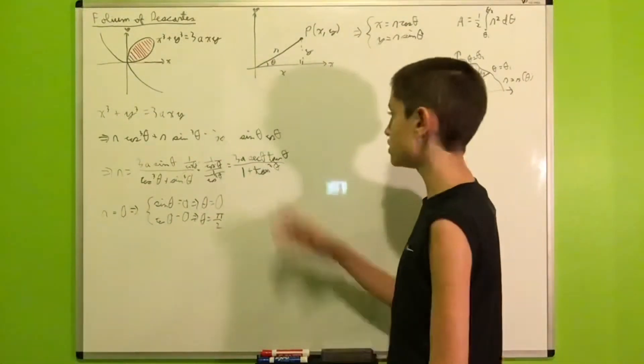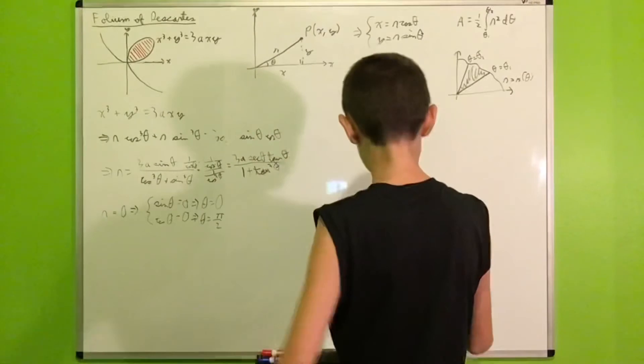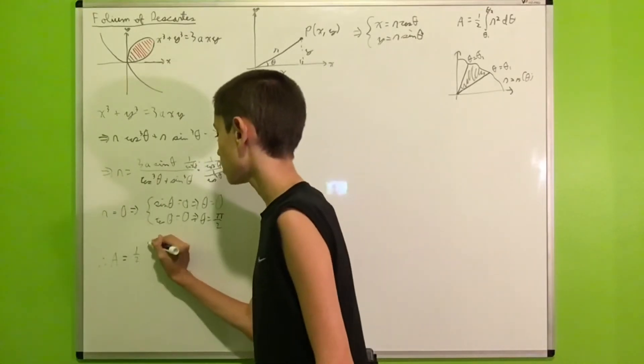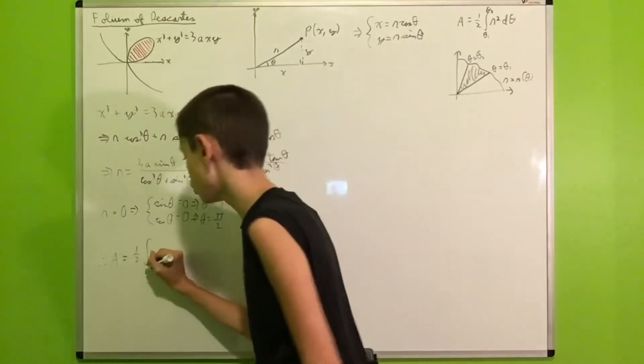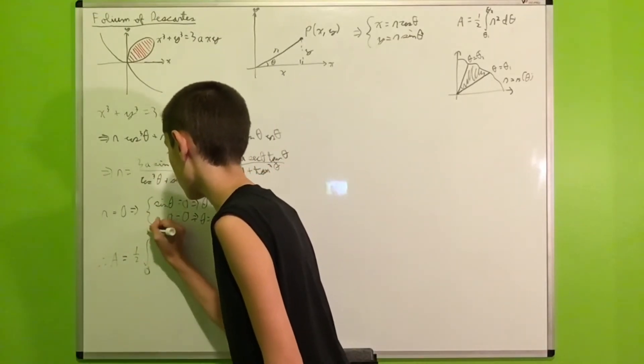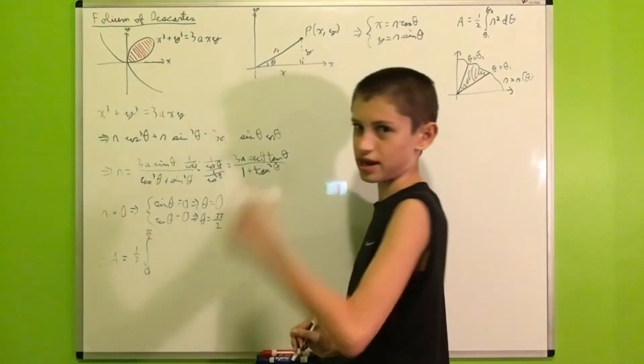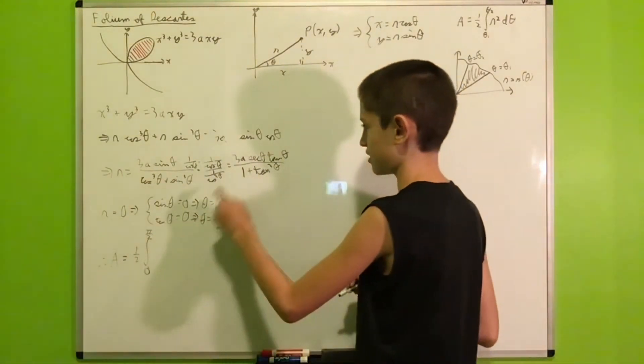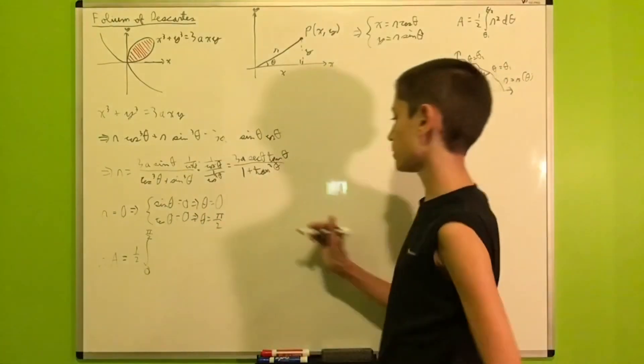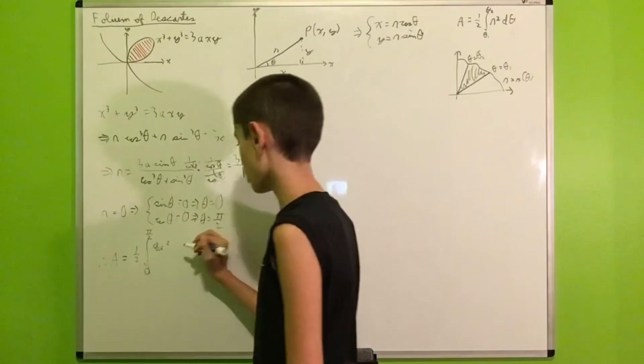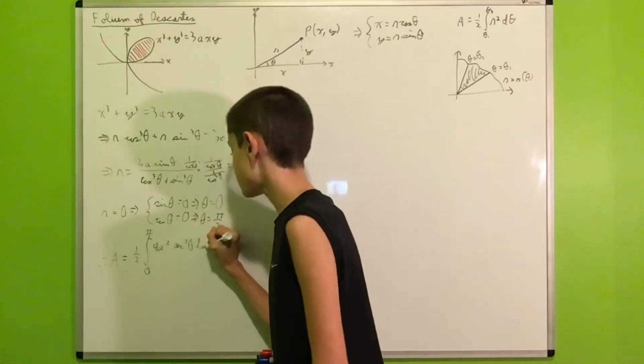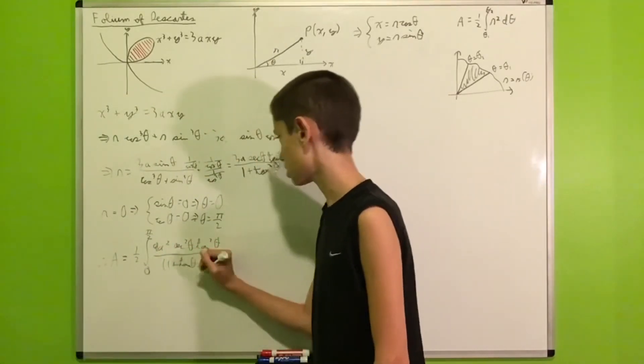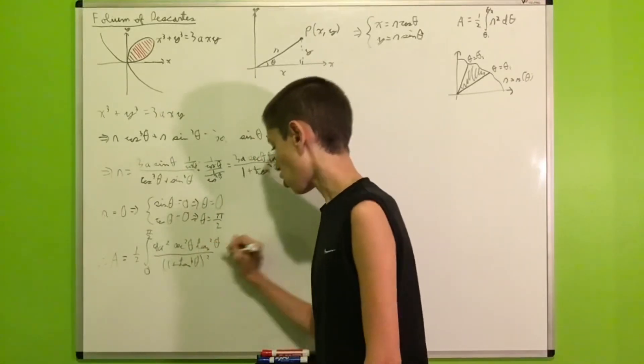So, now that we have everything, we can plug what we have into this formula right here. Therefore, our area will be equal to 1 half times the integral from 0 to pi over 2 of r squared. So, we get 9a squared times secant squared theta tangent squared theta all over 1 plus tangent cubed theta, all squared.